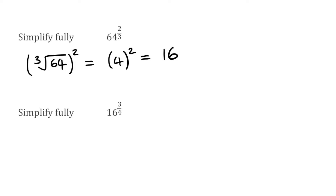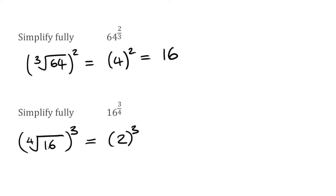For 16 raised to the power of three quarters, we need to find the fourth root of 16 and then cube the result. The fourth root of 16 is two, and two cubed gives us eight. So 16 to the power of three quarters is eight.